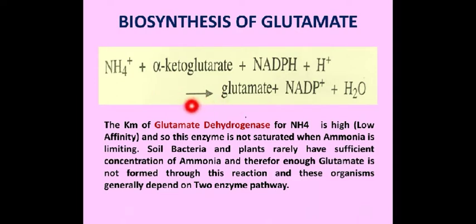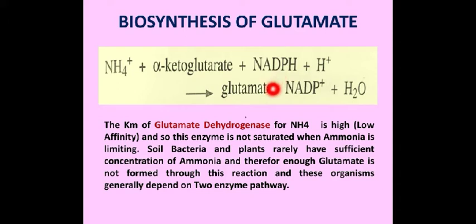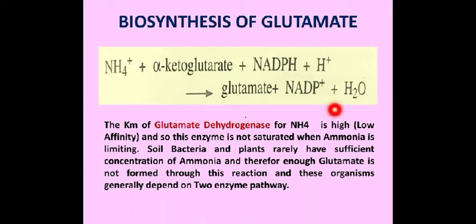This enzyme is present in all living organisms, and this reaction is called reductive amination. NADPH acts as a reductant in this reaction. In eukaryotic cells, glutamate dehydrogenase is located in the mitochondrial matrix. The Km value of glutamate dehydrogenase for ammonium is very high, meaning low affinity, and therefore this enzyme is not saturated when ammonia is limiting.